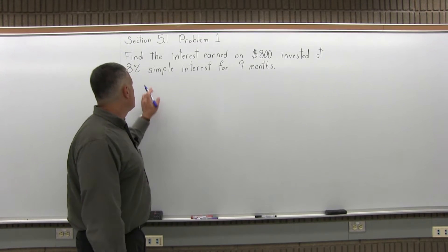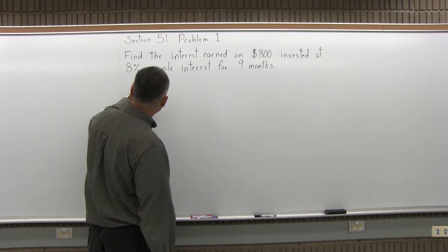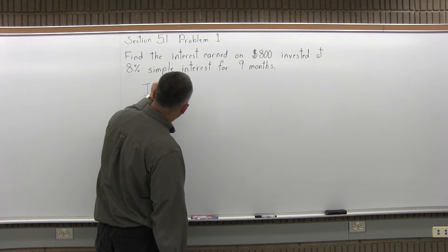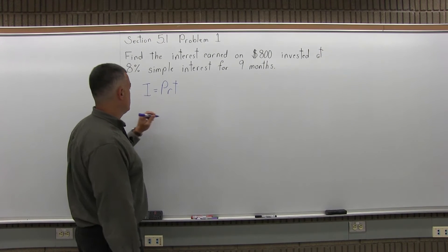Because the problem says simple interest, you're going to use the simple interest formula, which is I equals PRT. The interest equals the principal times the rate as a decimal times the time in years.